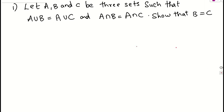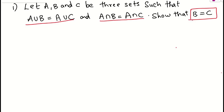Let us see what is the question given here. Let us consider A, B, C be the three sets, such that A union B is nothing but A union C, and A intersection B is nothing but A intersection C. Then what we need to prove? We need to prove that B must be equal to C. So we need to consider these two things as a given statement and prove that B must be equal to C. Now let us see how to prove.